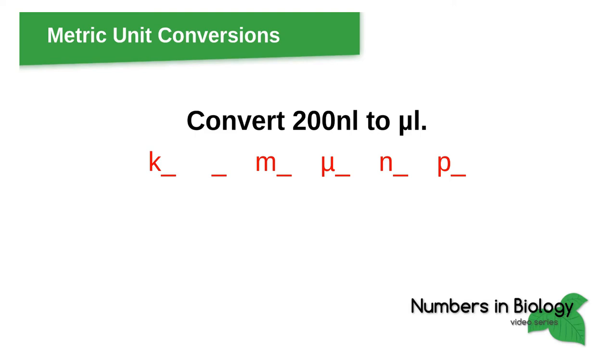Time's up. In this case, we are converting nanoliters to microliters, so we will be moving the decimal point towards the left. 200 is going to move to the left by three decimal places. So the answer is 0.2 microliters. Next question.